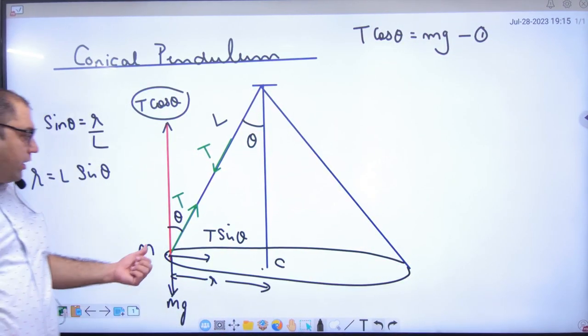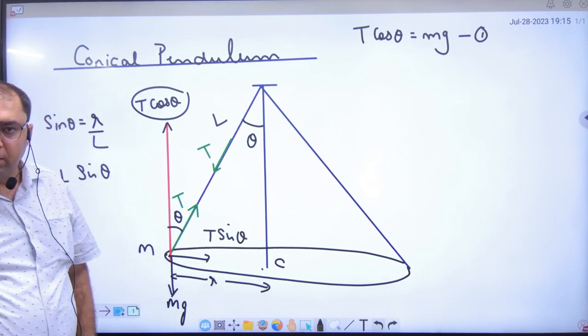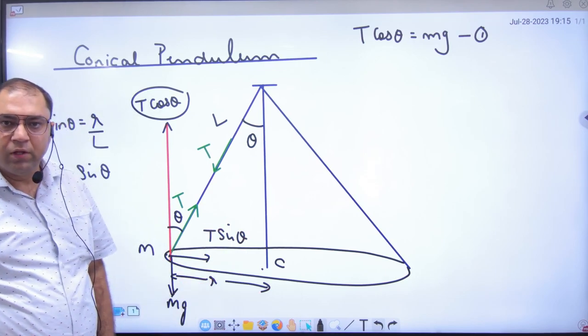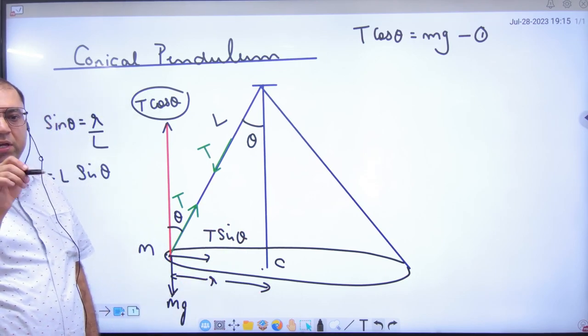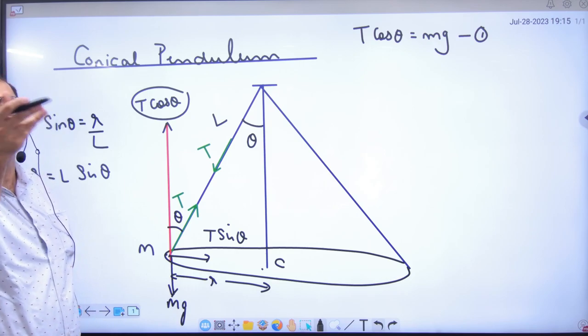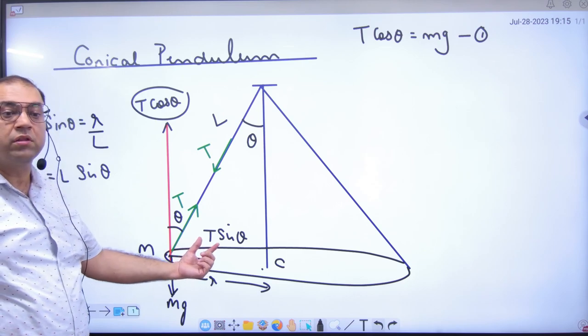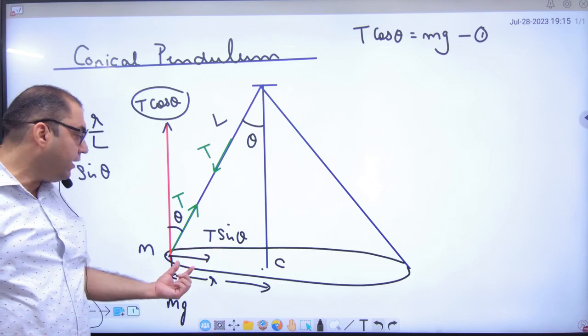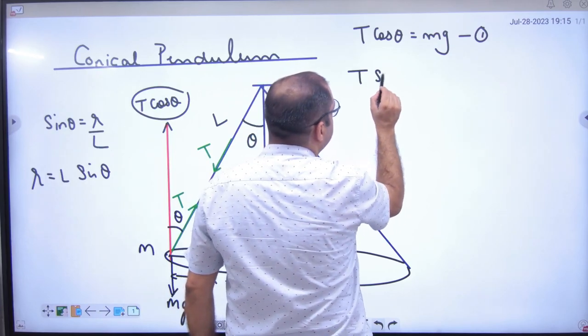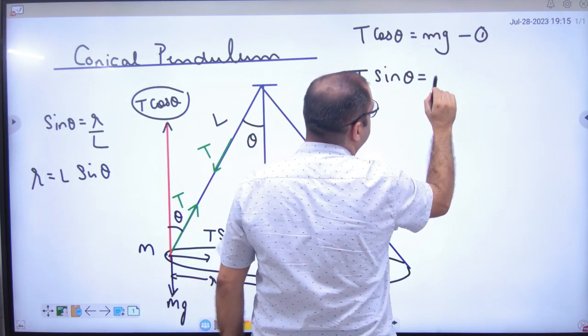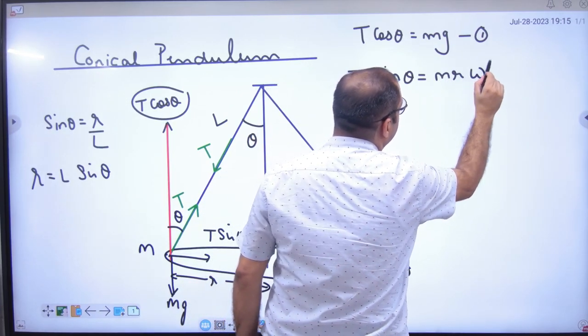And this stone is circling in the circle. What do you need? Centripetal force. Who is providing centripetal force? T sin theta. Which force is pointing towards center? T sin theta. So T sin theta equals M R omega square.